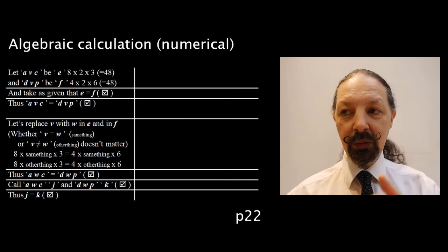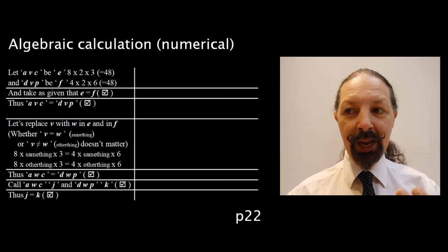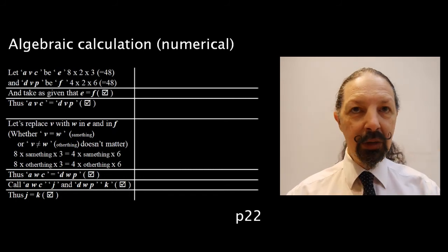So AWC equals DWP. We'll call AWC J, we'll call DWP K, J equals K.